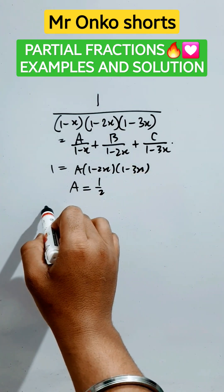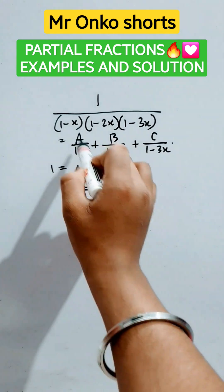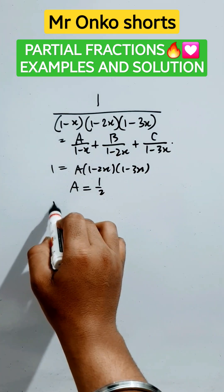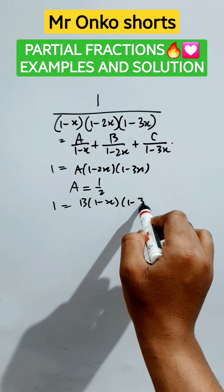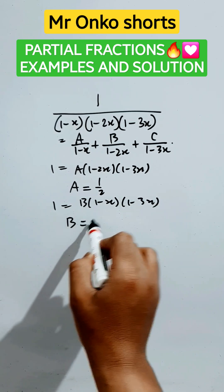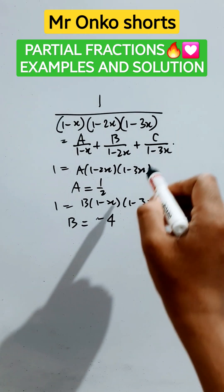In the second case, if we take x equals to 1/2, then these two parts will be vanished, so it will be 1 equals B into 1 minus x into 1 minus 3x. So if we put x equals to 1/2, then B will be equals to minus 4.